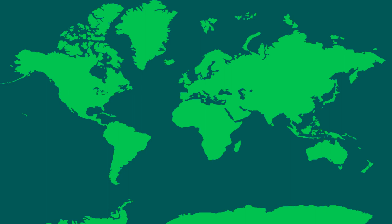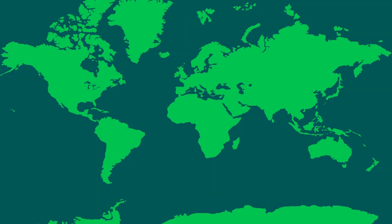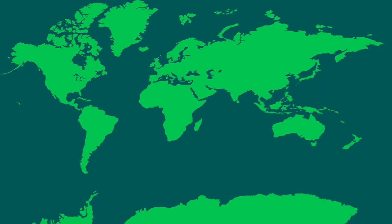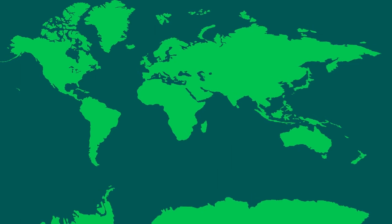My name is Eliel, and in this video I'm going to explain what exactly defines a continent, and how the Mercator projection — which is one of the most popular ways of projecting the world map — is actually distorting the way we see the world.